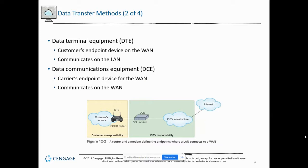We have different names for our equipment. Data Terminal Equipment, or DTE, is the customer's device. Data Communications Equipment, or DCE, is the carrier's device. The customer is responsible for the small office/home office router and wireless router — the DTE device — while the DSL modem is the carrier's responsibility. A lot of times we rent the wireless device from the carriers, which muddies the water, but technically the router is our device.